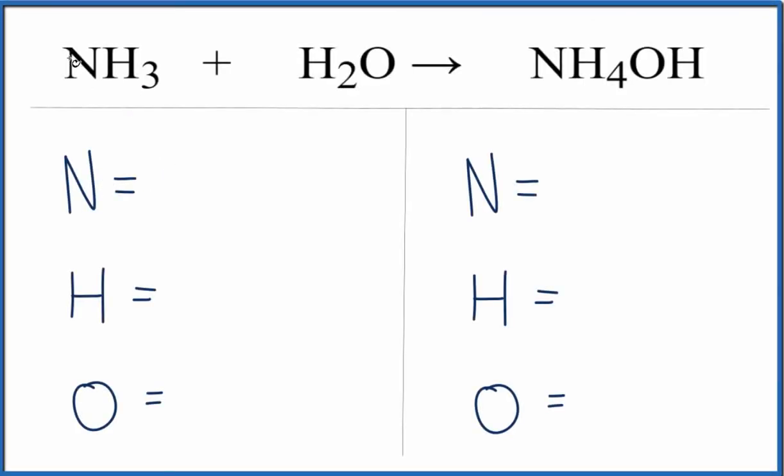Start with nitrogen, we have one. Hydrogen we have three, and remember you've got two more of them here, plus that two, so we have five hydrogen atoms. And then we have the one oxygen atom.